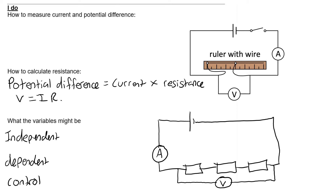The first thing we need to know is how to measure current and potential difference — these two terms are absolutely crucial. You can't really measure resistance directly in this practical; there are ways of measuring resistance but it doesn't work for small resistances. So you need to know that you measure current with an ammeter, and that ammeter needs to be placed in series.